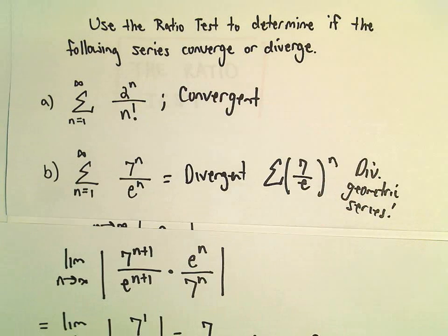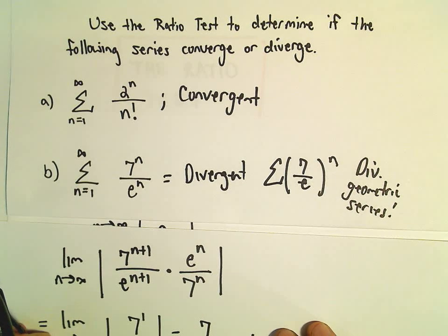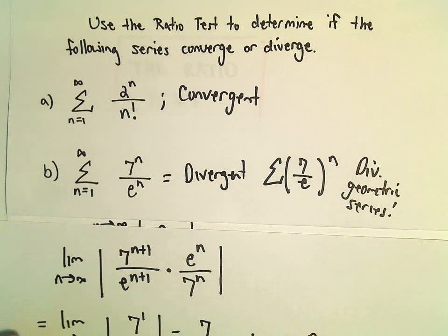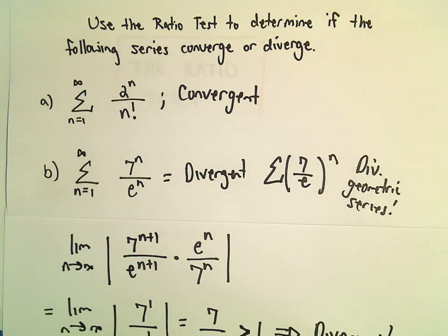So it's certainly going to be the case for a lot of series, there's many different ways to justify whether they converge or diverge. So kind of keep that in mind. I think some ways are certainly a little bit easier, some ways can be a little bit more tedious.